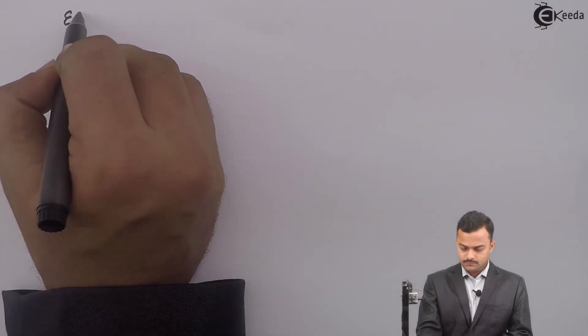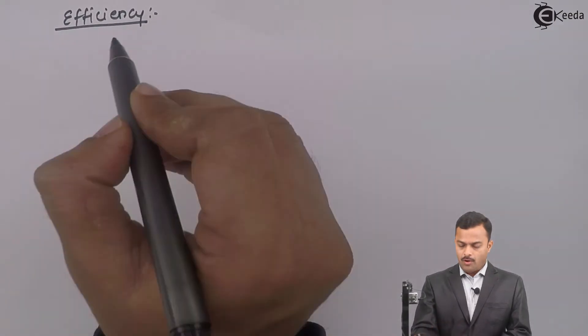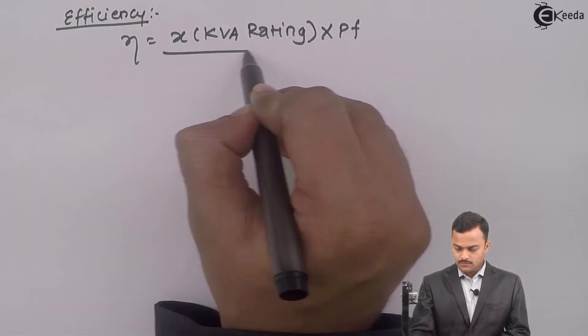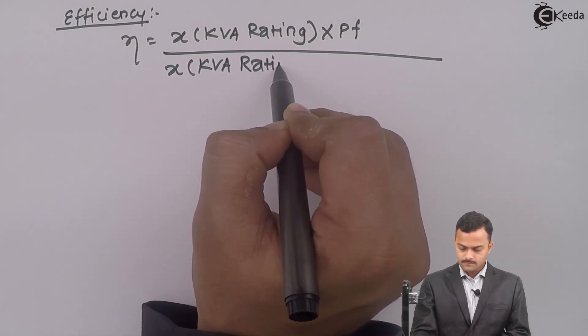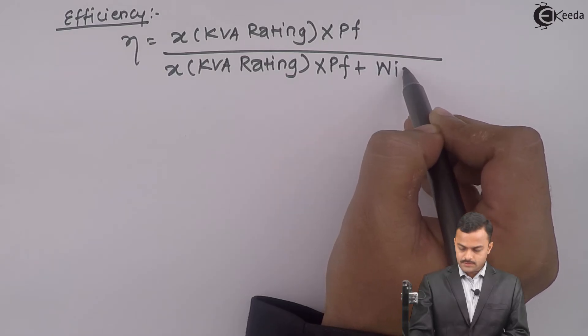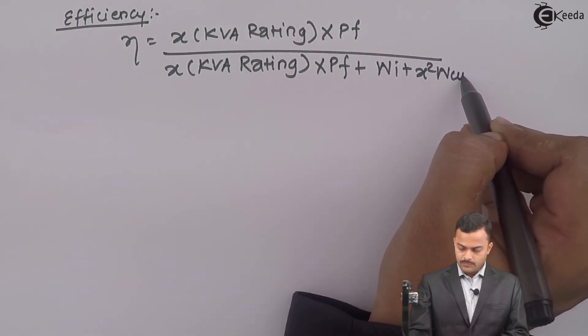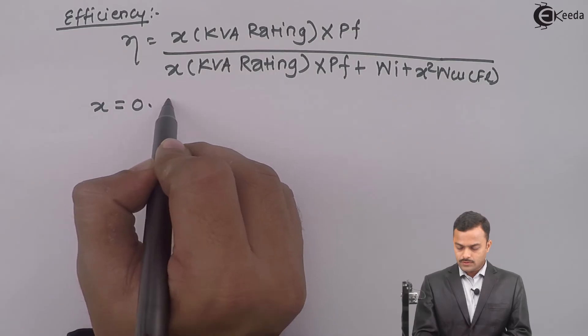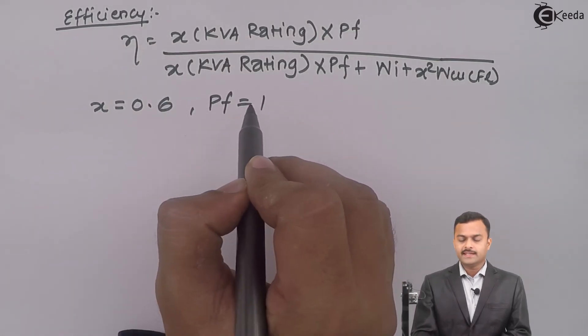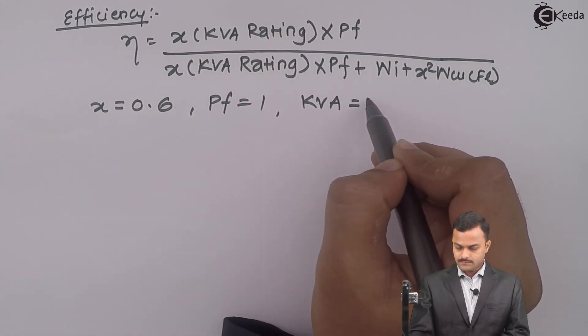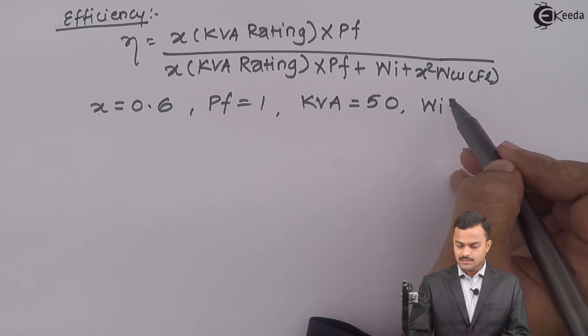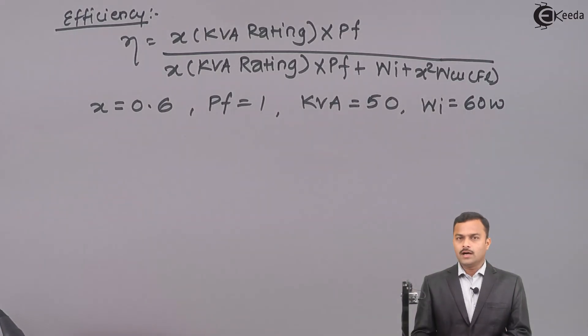Let us go to the second part now. Let us calculate efficiency of a transformer for a given load. The formula for efficiency is X into KVA rating into power factor upon X into KVA rating multiplied by power factor plus iron loss plus X square WCUFL. They are saying calculate for 60% of rated load. Hence X is 0.6, power factor is unity, KVA rating is 50. Whatever power we get for OC test is iron loss, 60 watt.